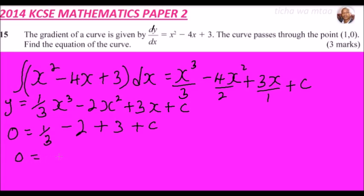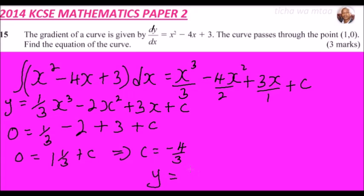Adding those terms: 1/3 - 2 + 3 = 1 and 1/3, which is 4/3. So we have 0 = 4/3 + c. Taking 4/3 to the other side gives c = -4/3. That is the value of c.